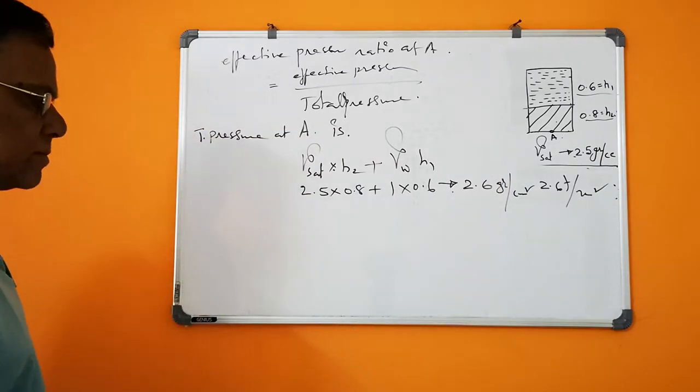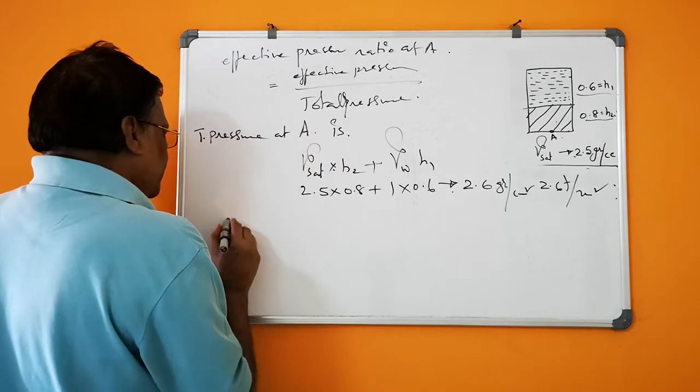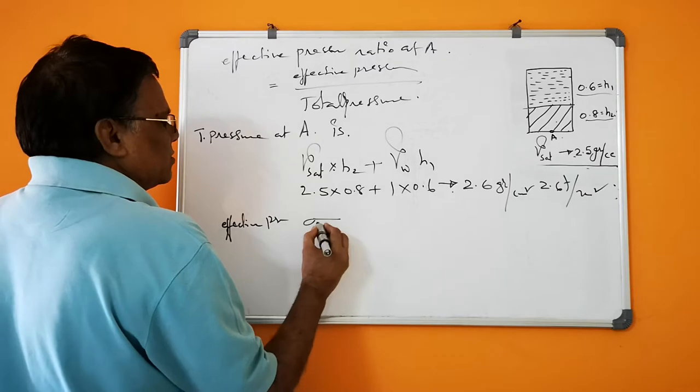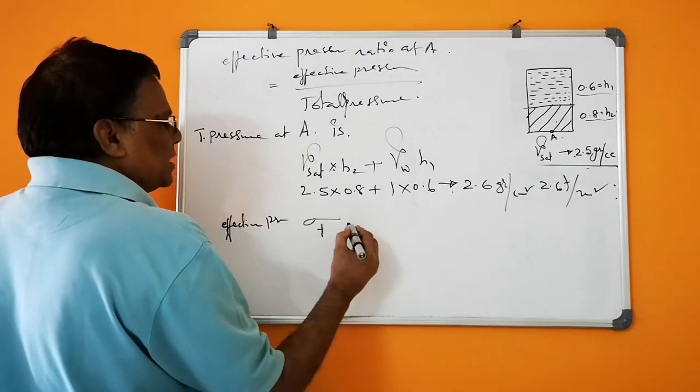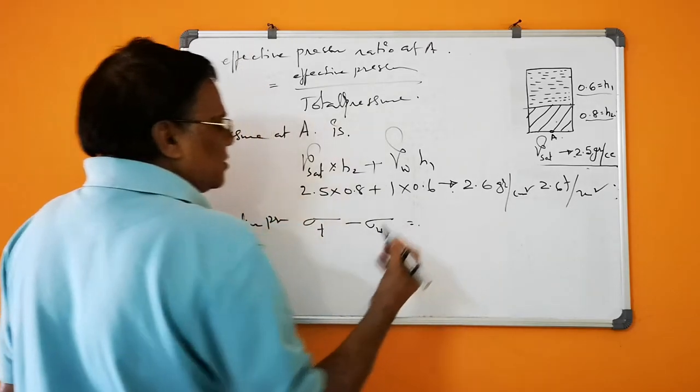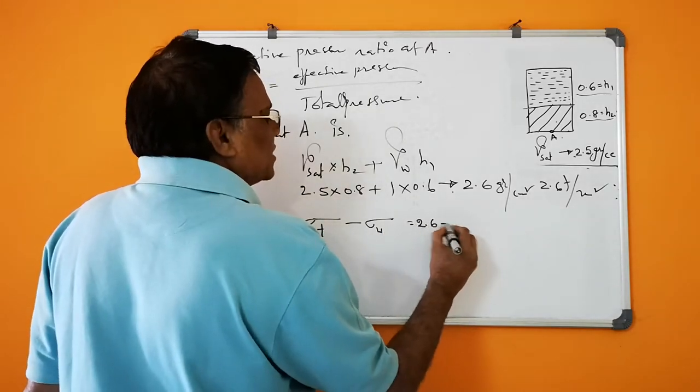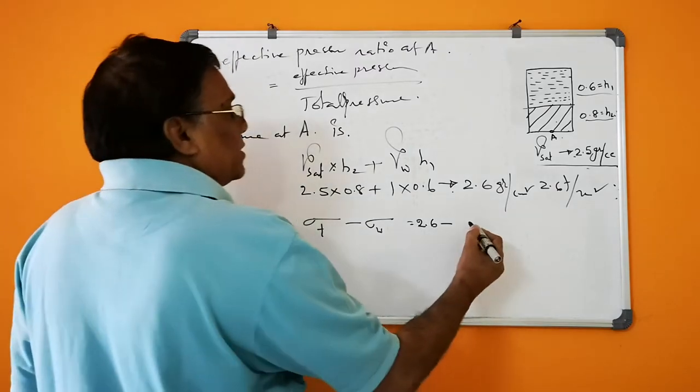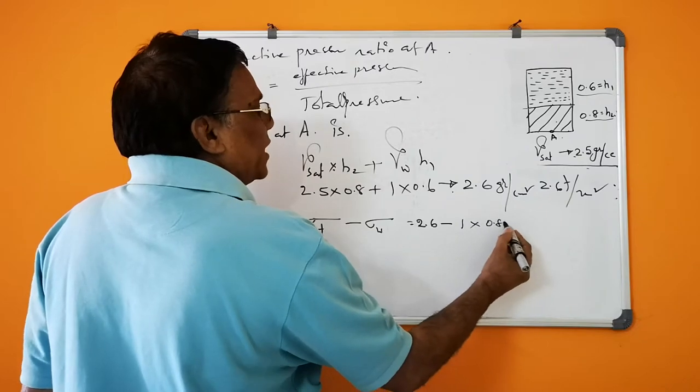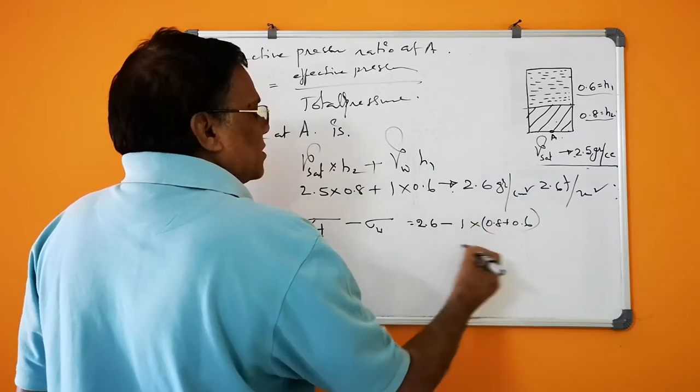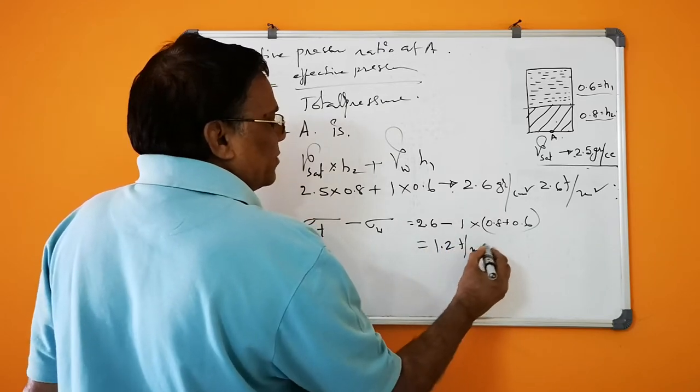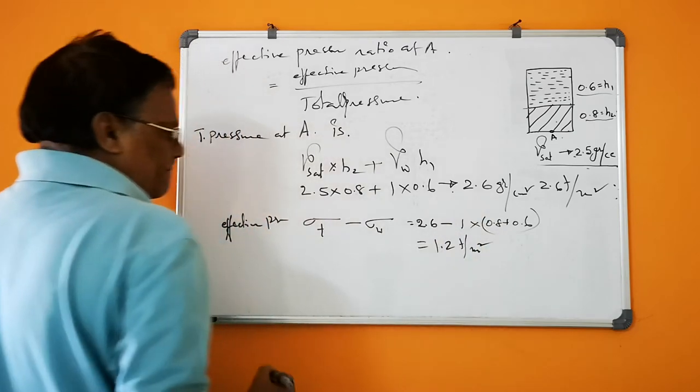Now the effective pressure. Effective pressure equals sigma total minus sigma water. Sigma water is 1 times 0.8 plus 0.6, which gives an effective pressure of 1.2 tons per meter squared.